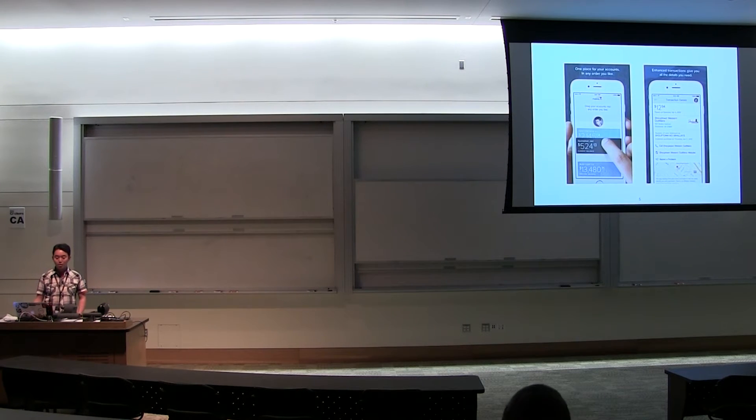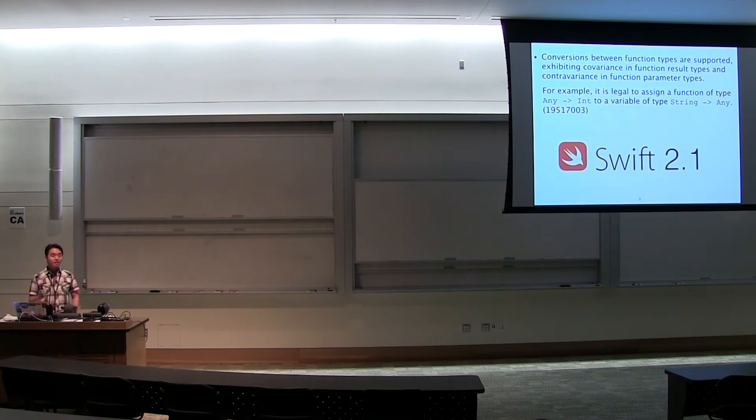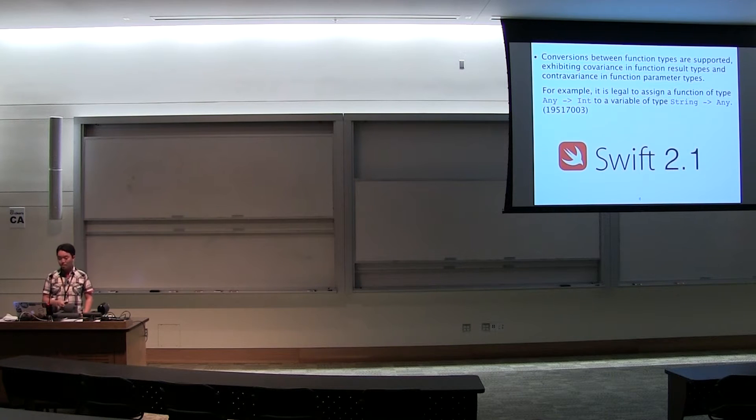Now I'm an iOS developer for Capital One working on the mobile app. When I joined, Swift was announced and it was a very exciting time. It's much better than Objective-C. It's a very new language, but it's growing and getting better rapidly. This past October, one of the features in Swift 2.1 was that conversions between function types are supported, exhibiting covariance in function result types and contravariance in parameter types. Cool. But C-sharp has had that since 2.0. Swift would be a much more powerful language if it supported variance in generics.